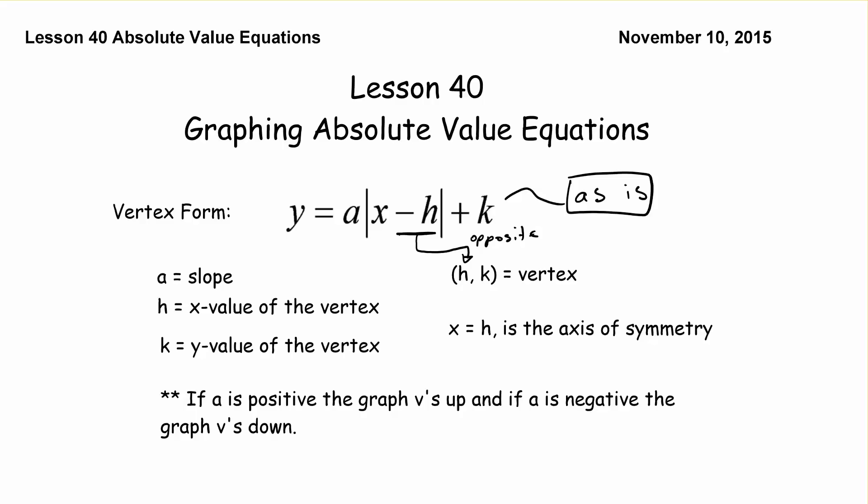So this is the vertex form of an absolute value equation. y equals a times the absolute value of x minus h plus k. Where our vertex is the point h and k. And because our general form of this says minus h, then our vertex is actually the opposite of whatever it says inside of there. So we take the opposite of h and we take k as is.